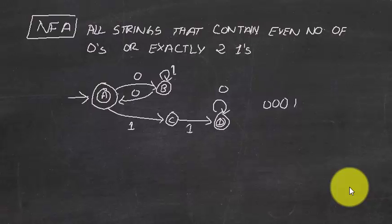NFA is like an easier, more free version — it's a more generalized view. You don't have to give all possible input combinations for every state. For example, in the diagram shown, at state A there is an input on zero and one.